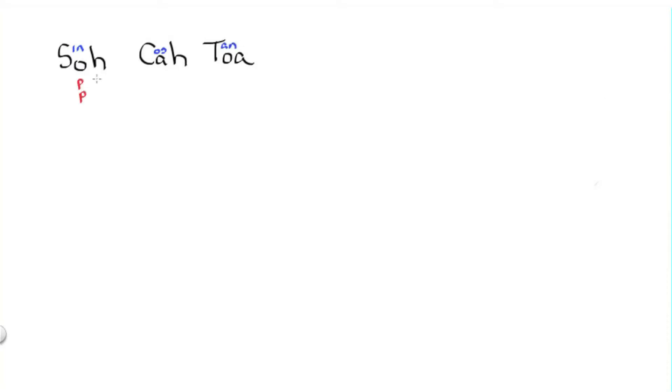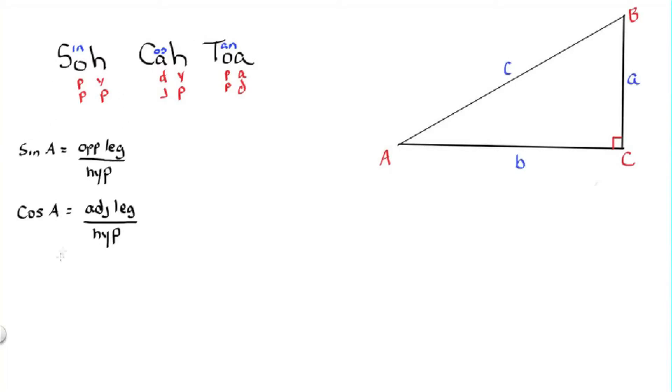SOHCAHTOA. You may want to remember this acronym, SOHCAHTOA. Sine of the angle equals the opposite leg over the hypotenuse. Cosine of the angle equals the adjacent leg over hypotenuse. And the tangent of the angle equals the opposite leg over the adjacent leg.